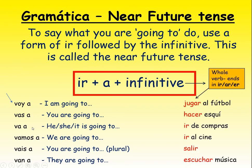So for example: 'va a jugar al fútbol' - he is going to play football. 'Vamos a salir' - we are going to go out. 'Van a escuchar música' - they are going to listen to music. 'Vas a ir de compras' - you are going to go shopping. If you want to make a note of the different parts of ir again you can, but they are in your grammar book. There was also a little quiz on this before Christmas which you might want to try again in the free time section on GCSE Spanish.